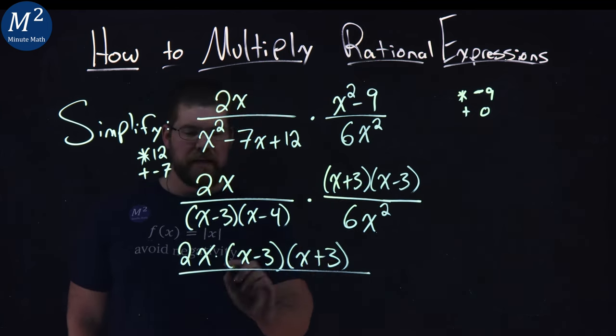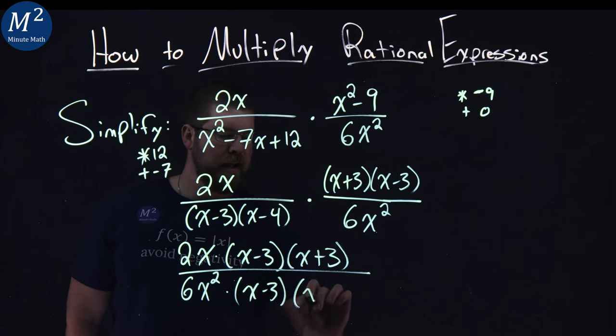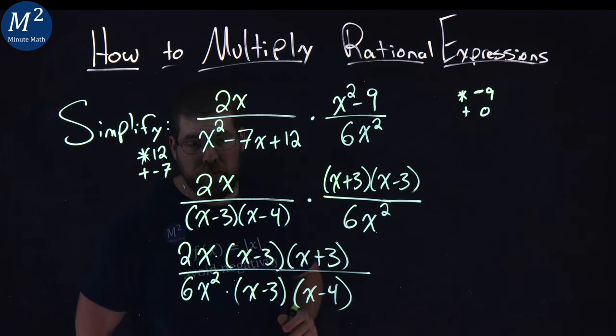Denominator, I'm going to put the 6x squared first, all right, kind of lining it up with the 2x, times, let's do the x minus 3 next, and an x minus a 4 after that.